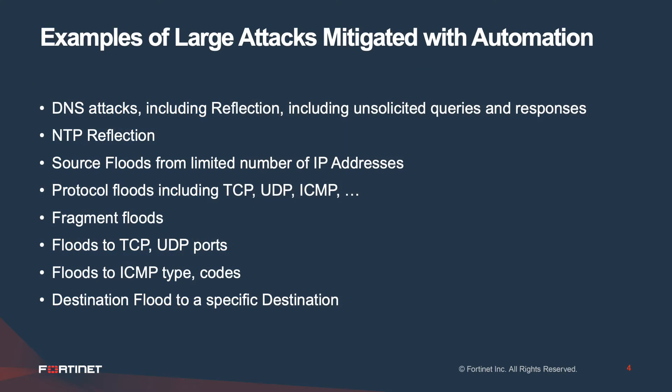Examples of large attacks mitigated with automation include DNS attacks including reflection attacks — some of which are unsolicited responses and unsolicited queries — NTP reflection, source floods from a limited number of IP addresses, protocol floods including TCP, UDP, ICMP, GRE, and others, fragmented floods, floods to TCP and UDP specific ports, floods to specific ICMP type and codes, and destination floods to specific destinations.